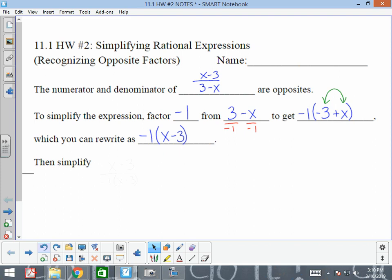When we now simplify this expression, it's rewritten as x minus 3 over negative 1 parentheses x minus 3. Now we can cancel out the x minus 3 on top and the x minus 3 on bottom.